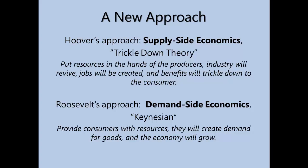Roosevelt's administration's approach is what we call demand-side economics, or Keynesian theory — John Maynard Keynes developed this particular theory. In supply-side economics, the supply side refers to the producers — the people who supply the goods. Demand side refers to the consumers — the people who demand and purchase the goods. In demand-side economics, the philosophy is that the consumer should be provided with resources that enable them to create demand, and industry will then respond to that demand by producing more goods, creating more jobs, and the economy will grow that way. The real difference between these two economic theories is where the money goes first.